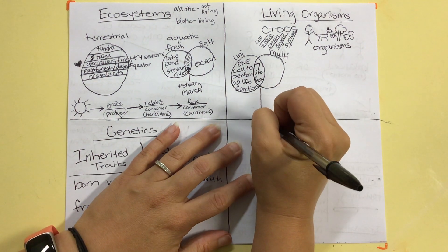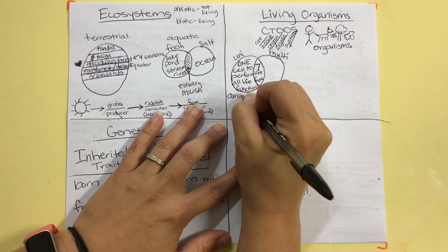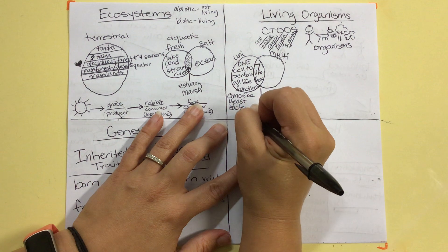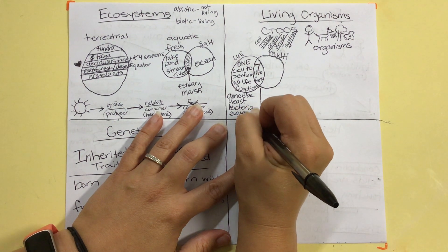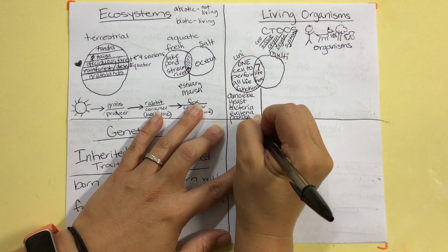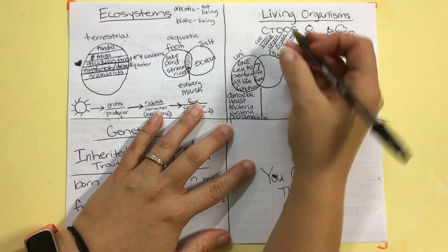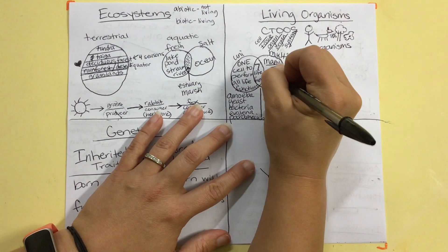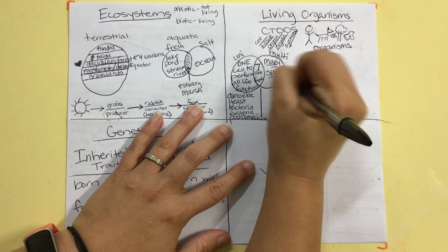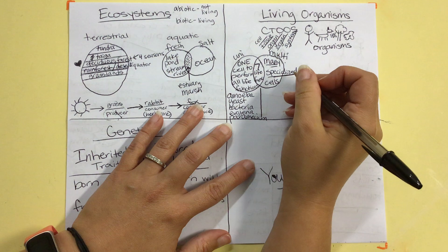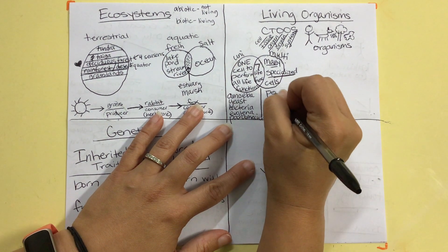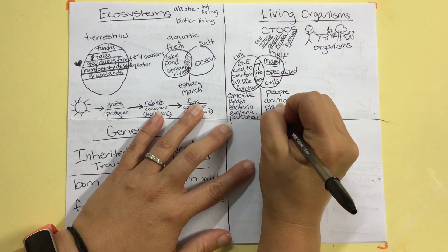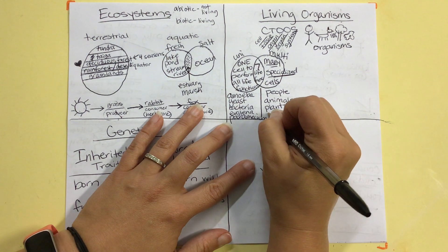Some examples of those unicellular organisms are amoeba, which we just drew right up there. We have yeast, bacteria, euglena, paramecium. Those are all unicellular organisms. Multicellular organisms are made up of many specialized cells. And, examples of multicellular organisms are things like us, people, animals, plants, and insects. Those are all good examples of multicellular organisms.